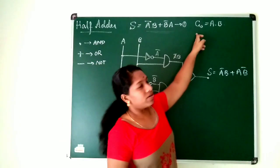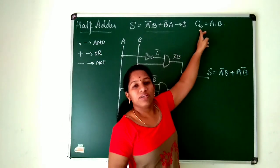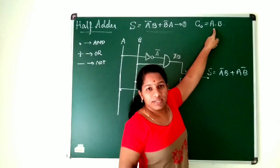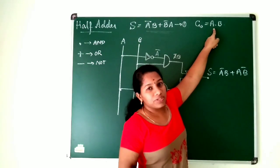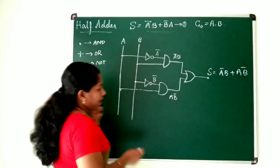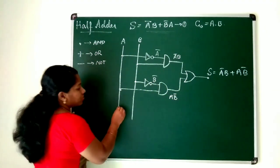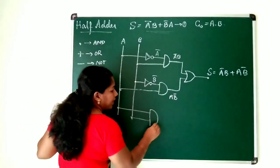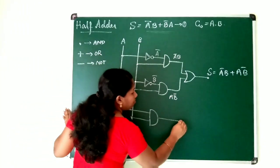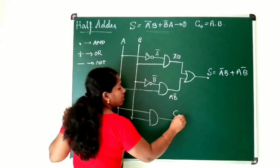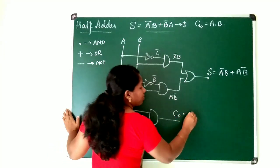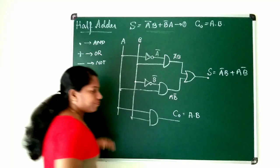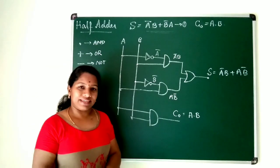Next, we construct C₀. C₀ = A·B. Since we have a dot, we use an AND gate. Tap A and B and connect them to an AND gate. The output is your C₀ = A·B. That's all for constructing the half adder using basic gates.